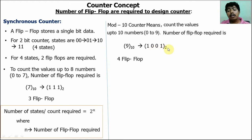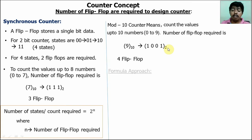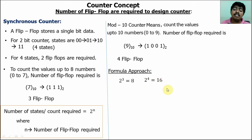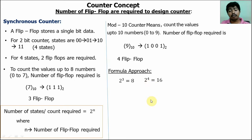If we use three flip-flops, the maximum count is up to 7 (111 in binary), so we cannot represent 8 and 9. Using the formula: 2^3 = 8 states, but we need 10 states. With 2^4 we can represent up to 16 states, which covers 10. So minimum four flip-flops are required — the answer is 4.